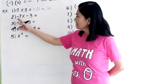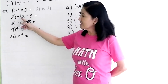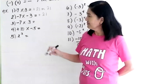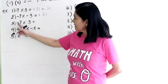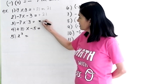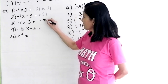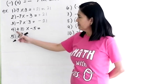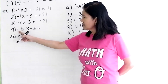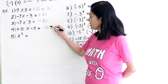Number 2: negative 7 times negative 3. Negative times negative — like signs — the answer is positive. 7 times 3 is 21. Number 3: negative 7 times positive 3. Negative times positive is negative, so the answer is negative 21. Number 4: positive 10 times negative 5. Positive times negative is negative. 10 times 5 is 50, so the answer is negative 50.